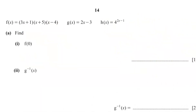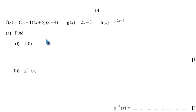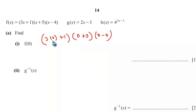This is question 9 from paper 0580/41, October-November 2023. We have f(x), g(x), and h(x). Find f(0): substituting 0 gives 3 times 0 plus 1, times (0 plus 5), times (0 minus 4), which equals 1 times 5 times negative 4, giving negative 20.